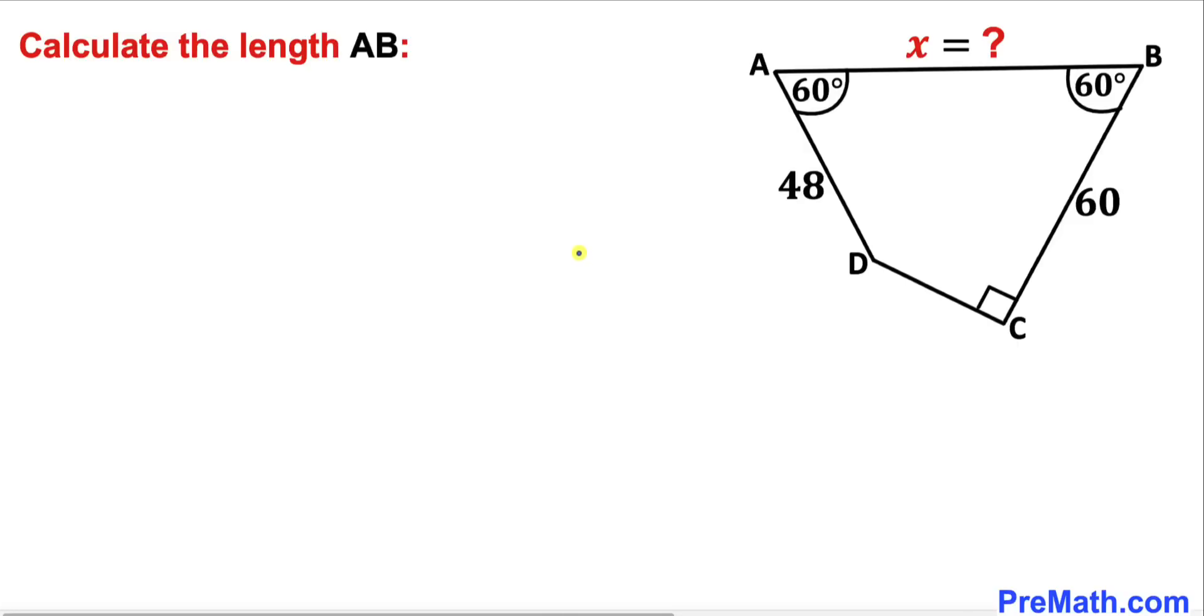Welcome to PreMath. In this video we have a quadrilateral ABCD where angle A is 60 degrees, angle B is 60 degrees, and angle C is 90 degrees.